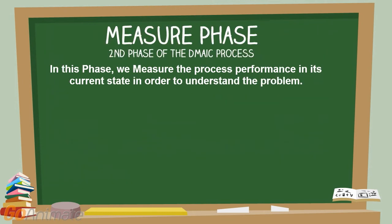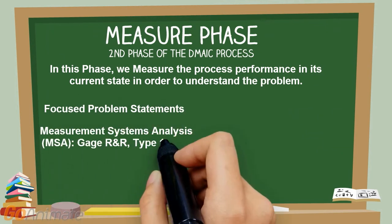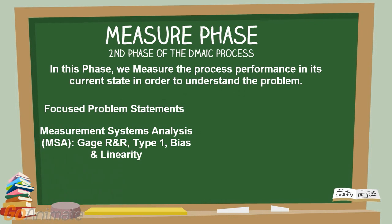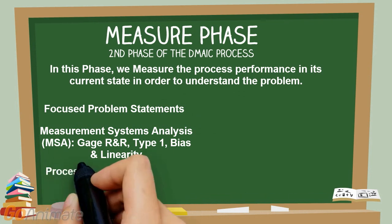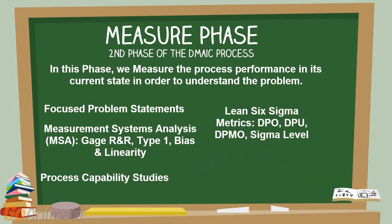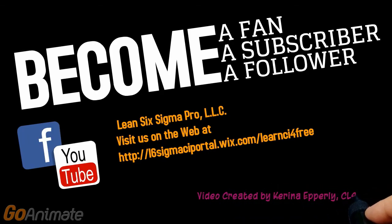At the end of the Measure phase, you will have completed several activities in order to complete the following tasks and objectives: focused problem statements; measurement systems analysis including gauge R&R, Type 1, bias and linearity; process capability studies; Lean Six Sigma metrics including DPO, DPU, DPMO, and sigma level; and a revised project charter. We hope that you have enjoyed this introductory module.